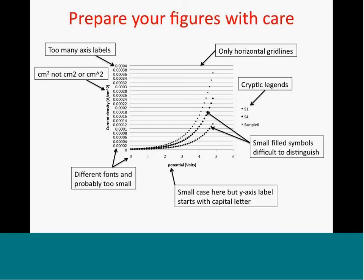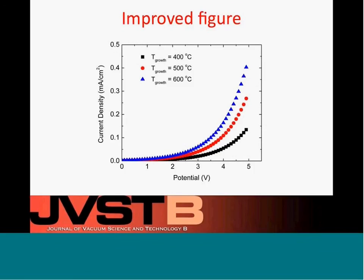If you're going to use grid lines, use them both horizontally and vertically, and do not make the axis or grid lines too light. Here's how to make a figure better: the legends are now self-descriptive so we know the data has something to do with growth temperature, and the growth temperatures are given. Symbols are larger and color is used to make data more apparent. Fonts and axis labels are larger, fewer numbers are used, and units are scaled to avoid too many zeros on the Y axis current density.